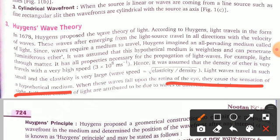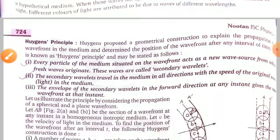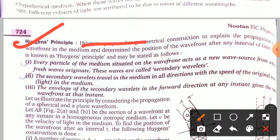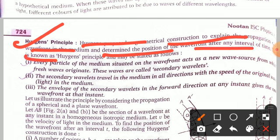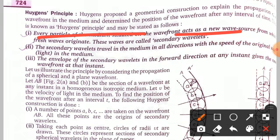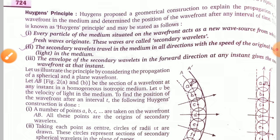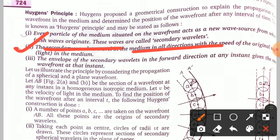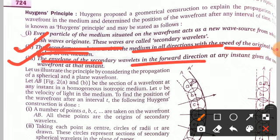Different colors of light are attributed to waves of different wavelengths. Now, Huygens' principle: Huygens proposed a geometrical construction to explain the propagation of the wavefront in a medium. It can be stated as follows: (1) Every particle of the medium situated on the wavefront acts as a new wave source from which fresh waves called secondary wavelets originate. (2) The secondary wavelets travel in all directions with the speed of the original wave. (3) The envelope of the secondary wavelets in the forward direction at any instant gives the new wavefront at that instant.